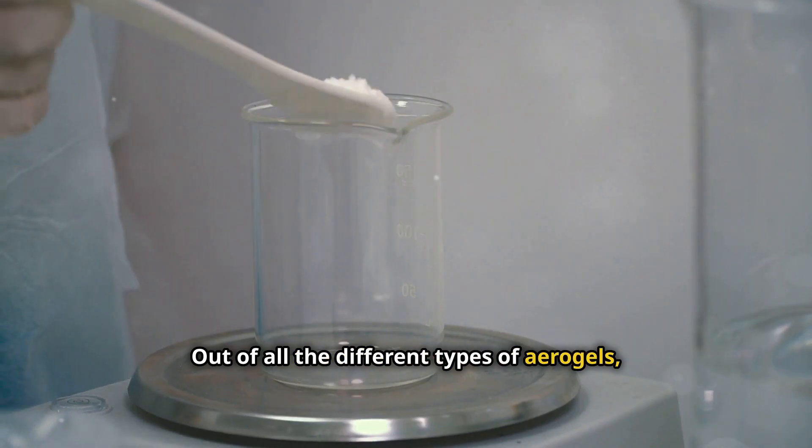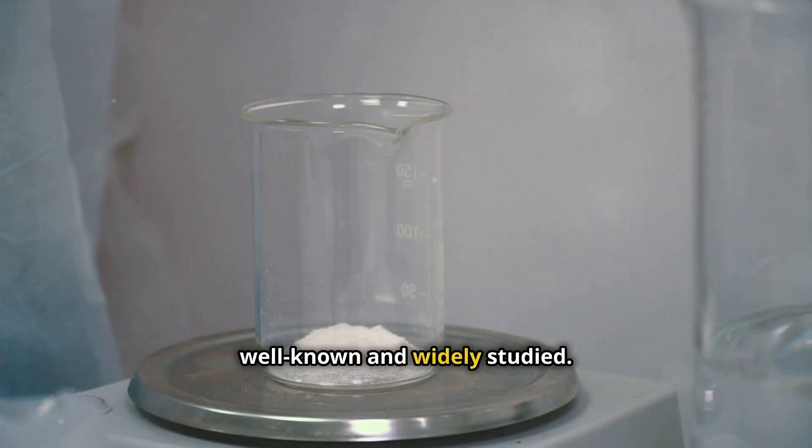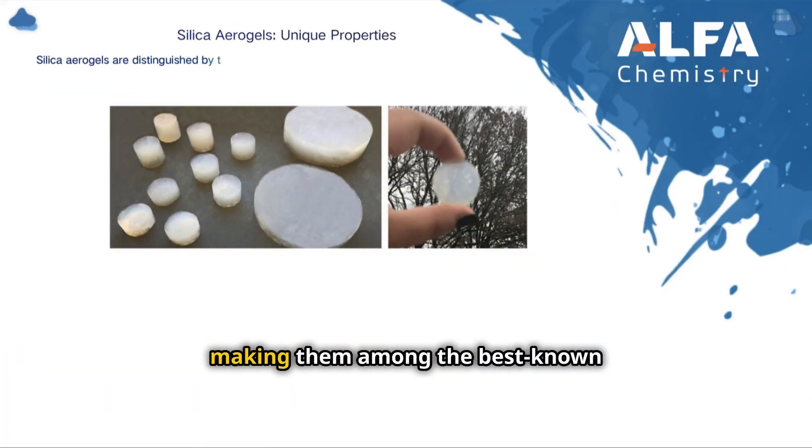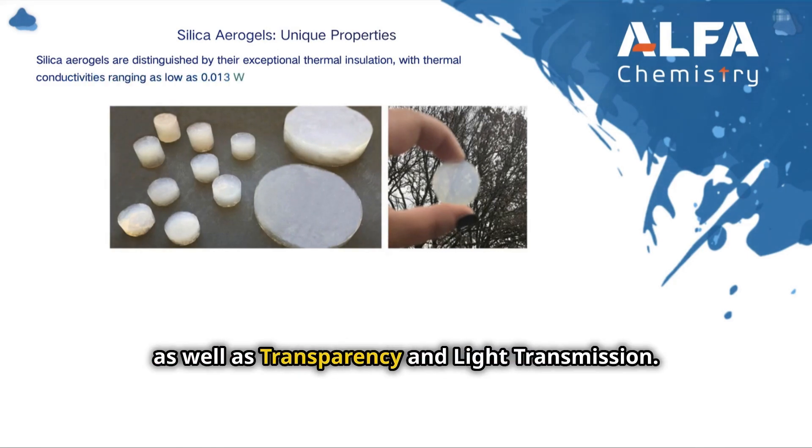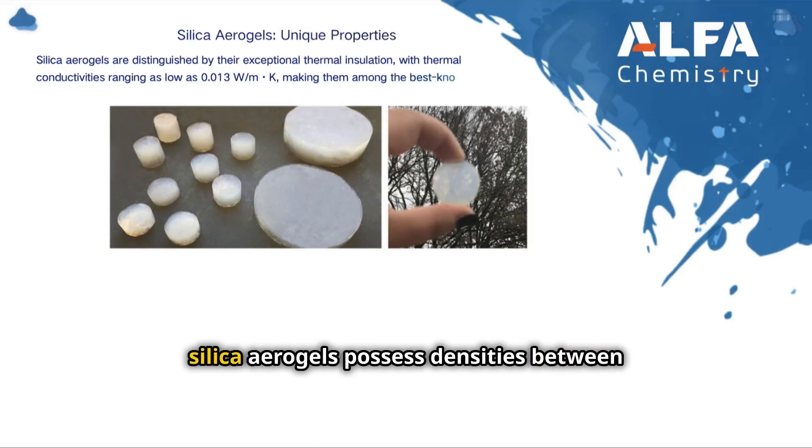Out of all the different types of aerogels, silica aerogels stand out as the most well-known and widely studied. Silica aerogels are distinguished by their exceptional thermal insulation, making them among the best known insulating materials. Their defining characteristics include low density and high porosity, high surface area, as well as transparency and light transmission.